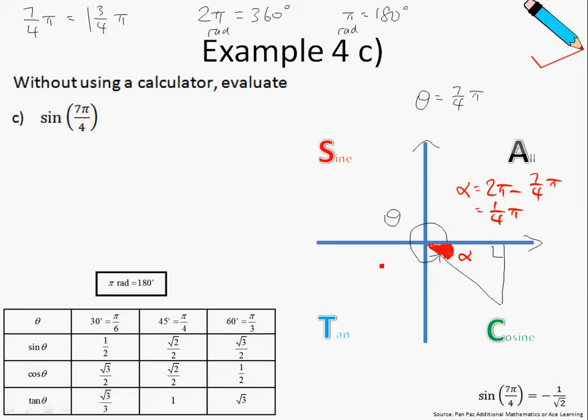Now take note that we are in the cosine quadrant, so this means that only the cosine of theta is positive. Since the question asks for the sine of theta, where theta is defined to be 7 over 4 pi, we can deduce that this answer will definitely be negative.